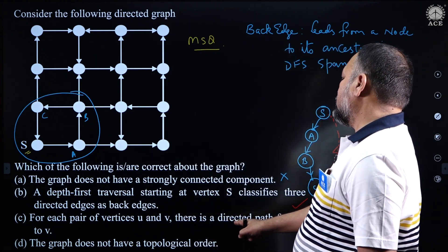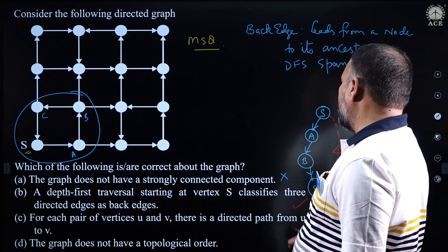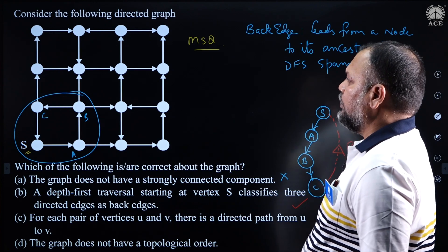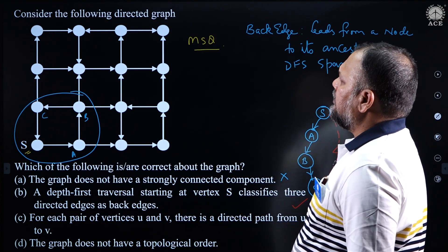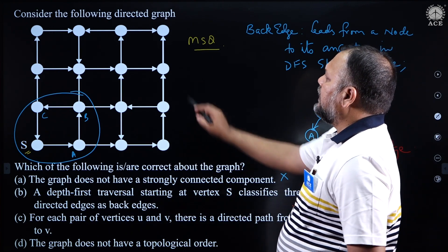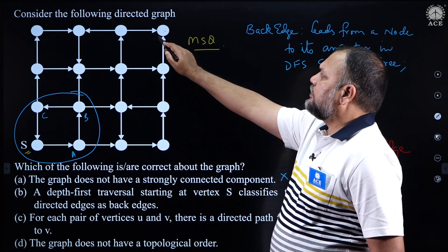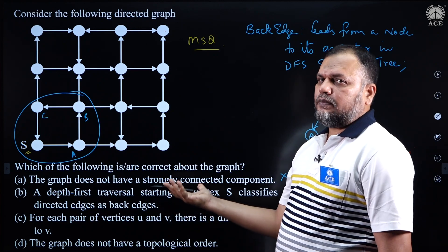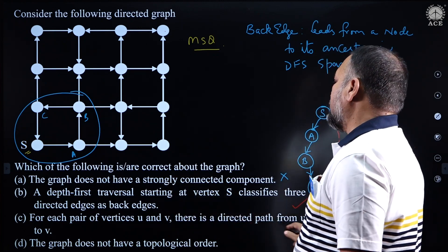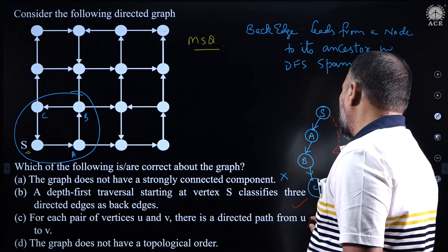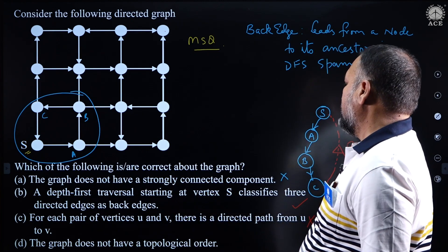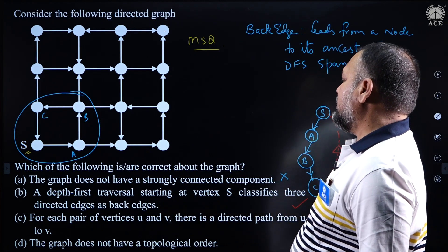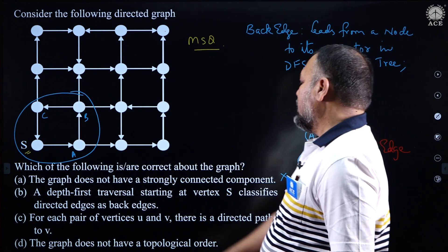For each pair of vertices U and V, there is a directed path from U to V — this option says so, but I do not have such a path. Take this vertex: there are no outbound edges, so there is no path. This option is straight away wrong. So option B is correct so far.